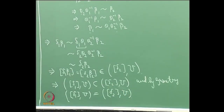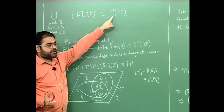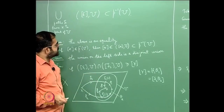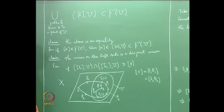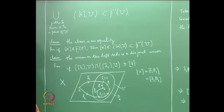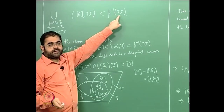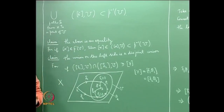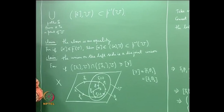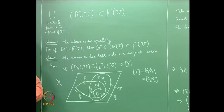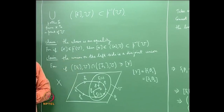This completes the proof that p⁻¹(U) is a disjoint union of sets of the form (δ, U), each homeomorphically mapped by p onto U. Therefore, any arcwise connected and simply connected open set U serves as an admissible neighbourhood for every point it contains, and p is a covering map.